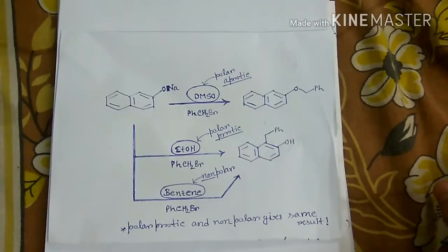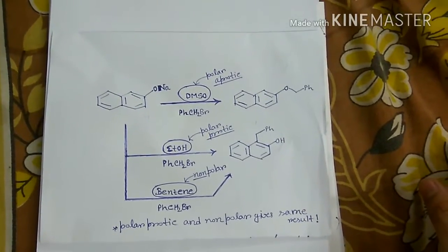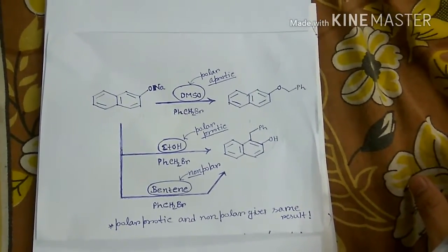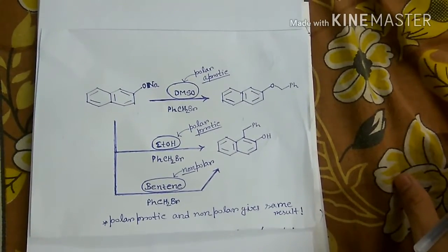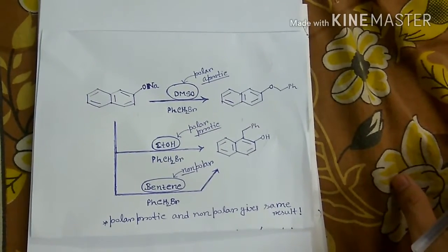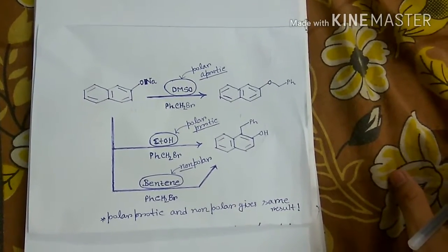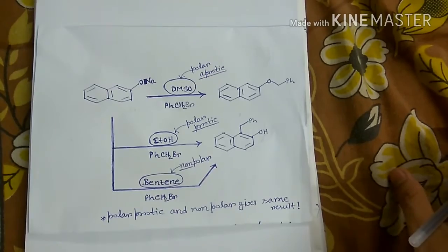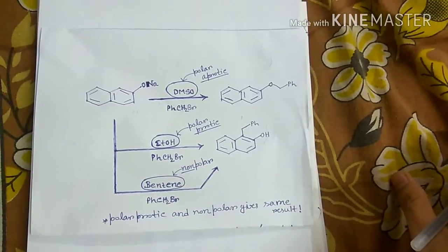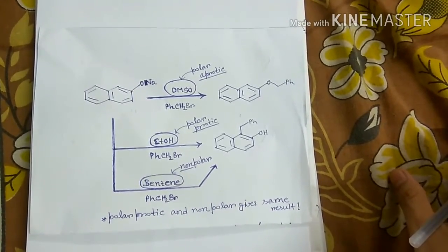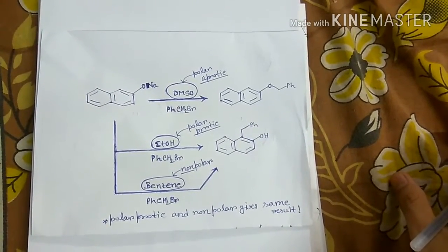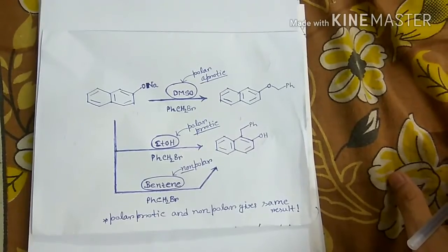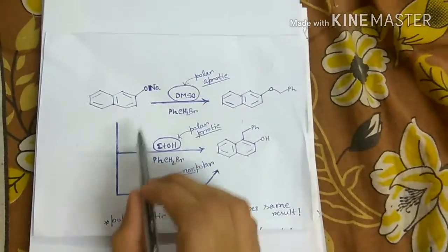Hello everyone. Today we will discuss how solvent is important for a chemical reaction. In this particular case, we are taking the case of an alkylation reaction and we will discuss how a change in the type of solvent can shift the mode of alkylation from C-alkylation to O-alkylation, or O-alkylation to C-alkylation.